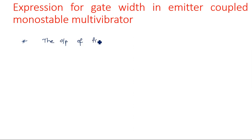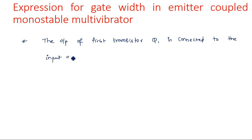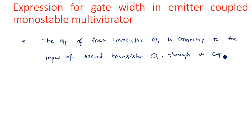There are two configurations: emitter coupled and collector coupled. We have already seen the collector coupled configuration. In the emitter coupled configuration, the output of the first transistor Q1 is connected to the input of the second transistor Q2 through the coupling element, which is the capacitor. This main capacitor, when charging, alters the state of Q2.